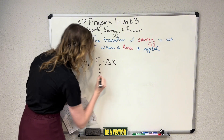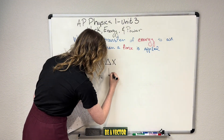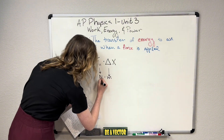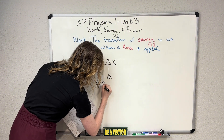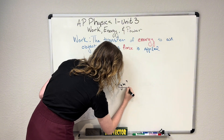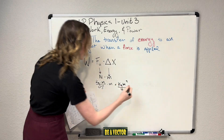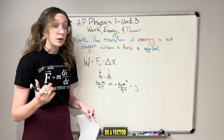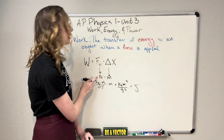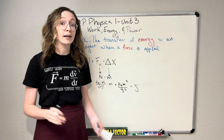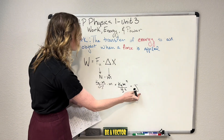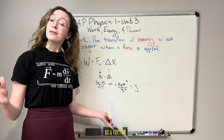Newton-meters can also be written as kilogram·meters squared per second squared, or we simply call it one joule. The joule is an honorary unit represented by a capital J, named after James Prescott Joule, who did some cool science back in the day. So when I say joule, I mean kilogram·meters squared per second squared, or newton-meters — those are the units of work.